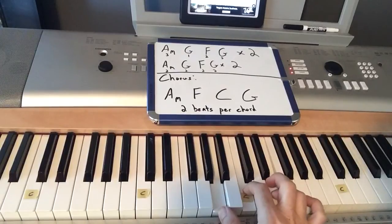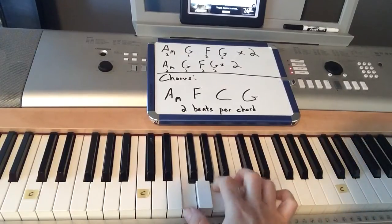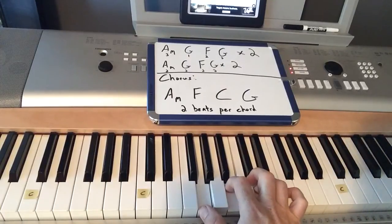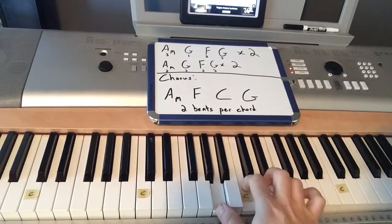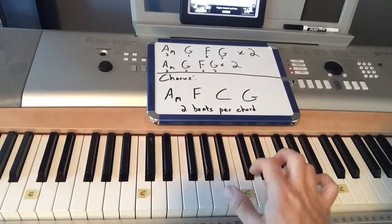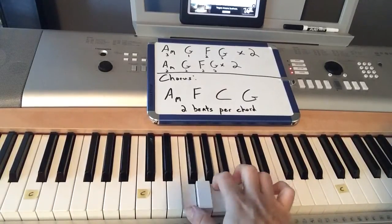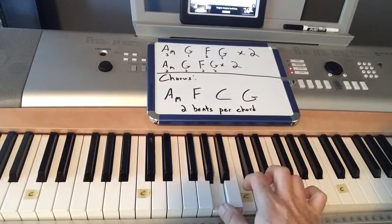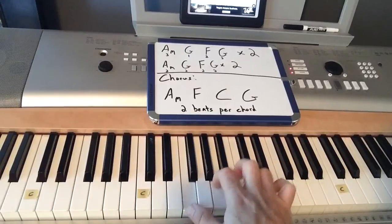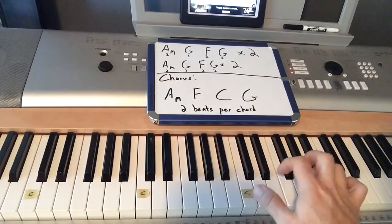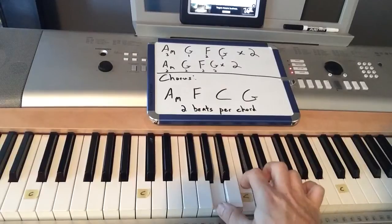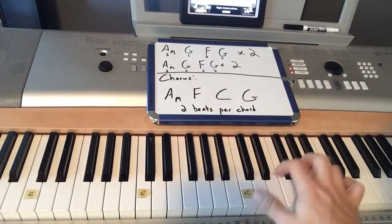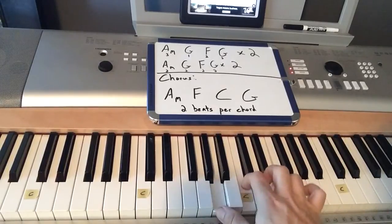So for the chorus, you're going A minor. Skip over to this F. All the way up to C. Then back down to G. Two beats per chord. Seek you first. I want to seek you, I want to seek you first. I want to keep you, I want to keep you first. More than anything I want, I want you first.